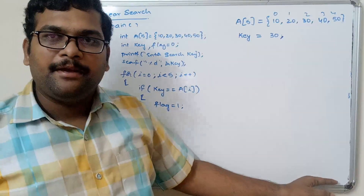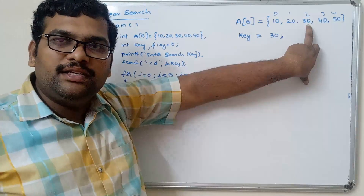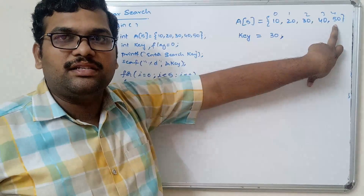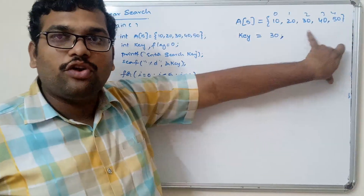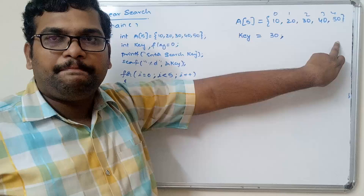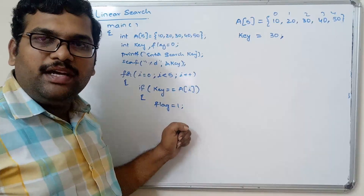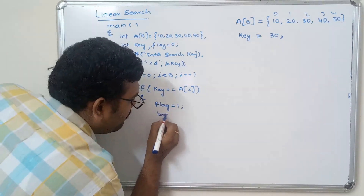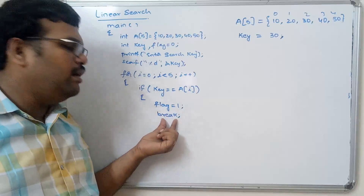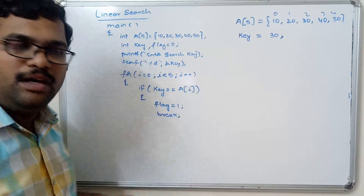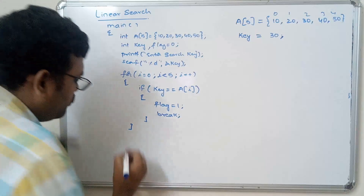If the key is found in, say, the second position, we need not search for the remaining elements — we do not need to compare against the third and fourth elements. So we stop as soon as we find the element. In the for loop, to stop execution we use the break statement. Immediately after the key is found, set the flag to 1 and break, so the control comes out of the loop. Then close the for loop.